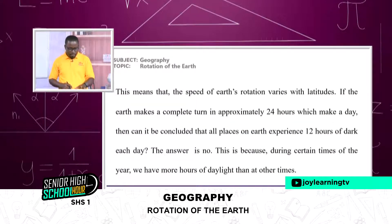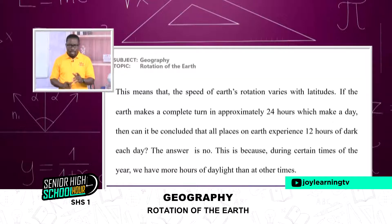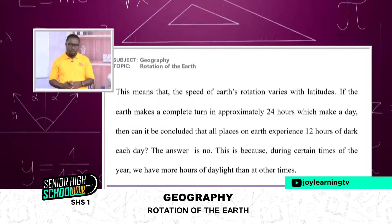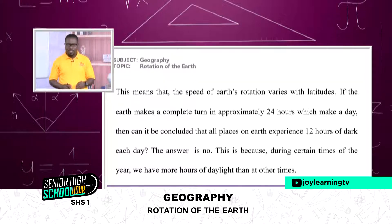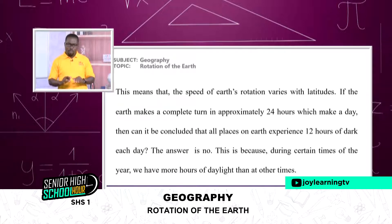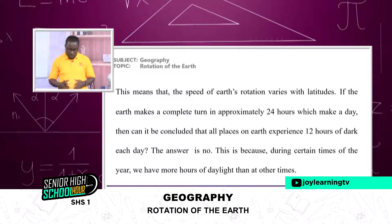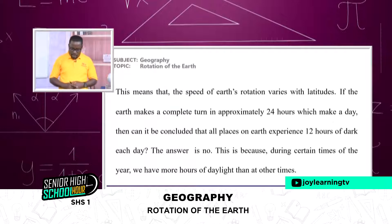This means that the speed of earth's rotation varies with latitudes. At the poles the speed is zero, but at the equator it's 1,600. So as one moves away from the equator towards the poles—either north or south—the speed will be reducing. It is not the same throughout as far as latitudes are concerned.